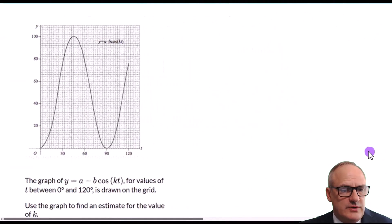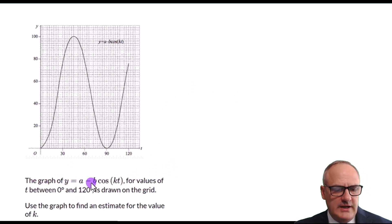Going on to the next question, we got asked this one. The graph of y equals a minus b cos kt, the values between t is 0 and 120 is shown on the grid. Use the graph to find an estimate for the value of k.